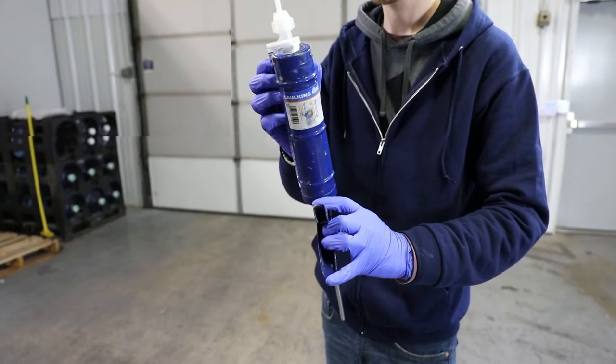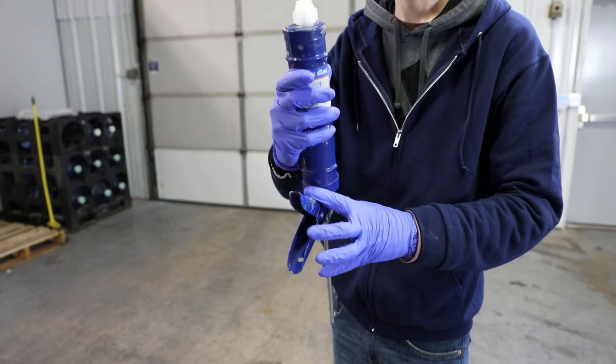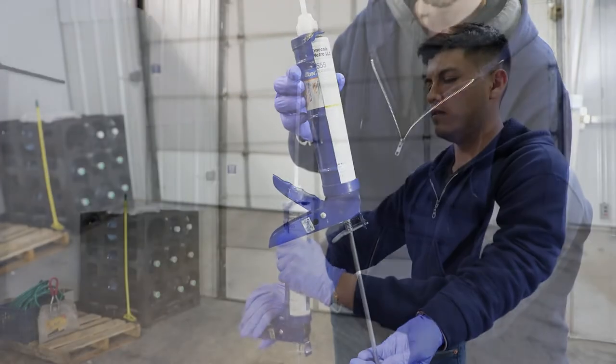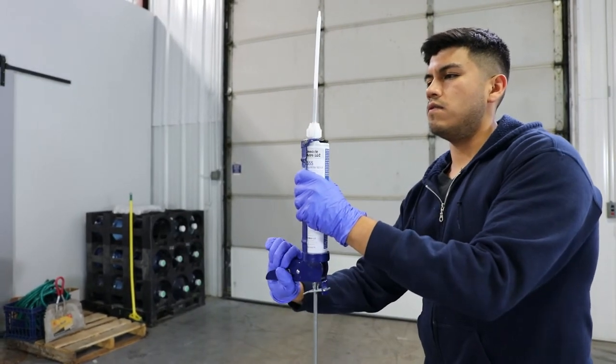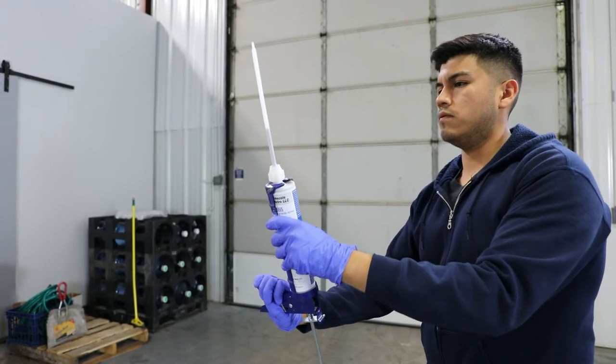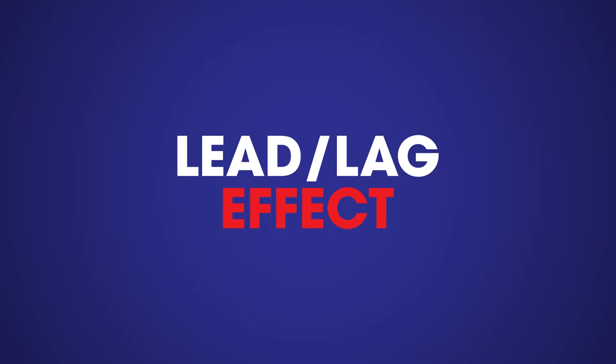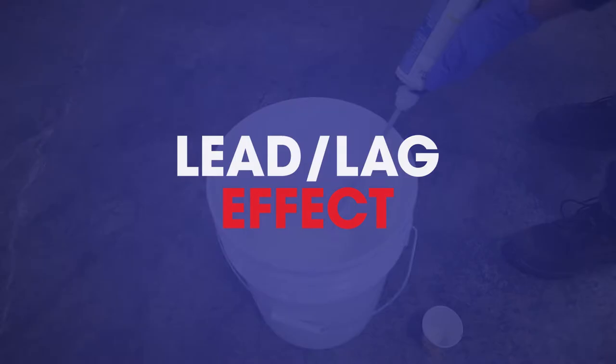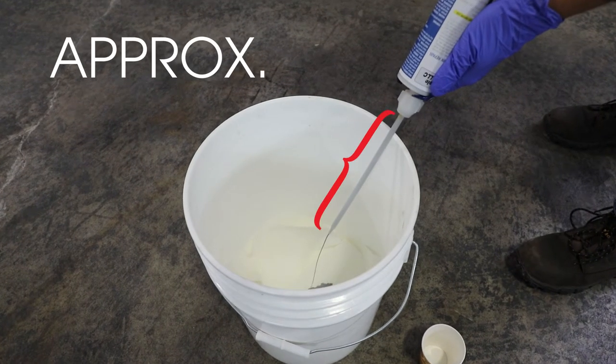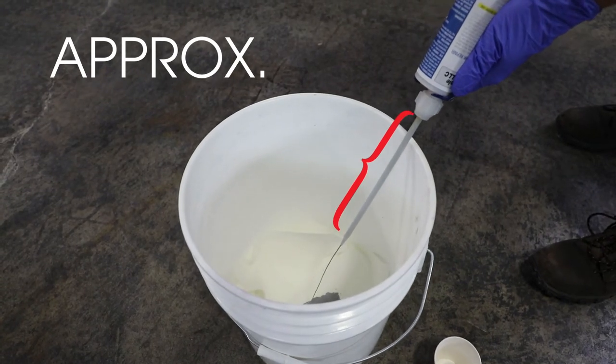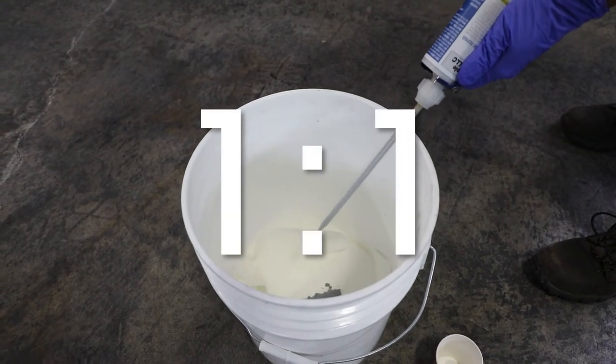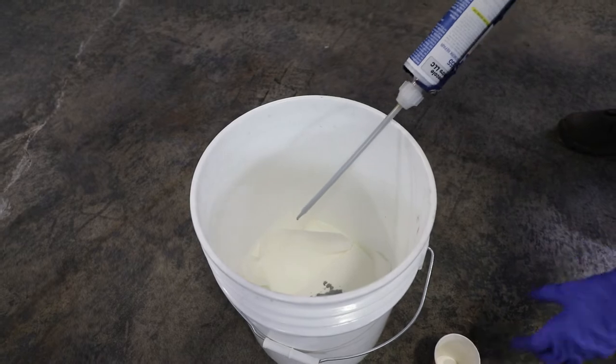While keeping the tube pointed up, insert it into the gun. Purge all the air in the mixer while rocking the tube side to side. Due to the lead lag effect where one component dispenses earlier or later than the other, discard approximately one mixer nozzle to get a good mix. This will ensure a 1 to 1 ratio of material. Do this for each tube you use.